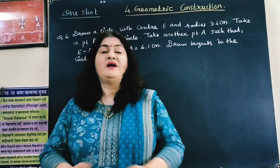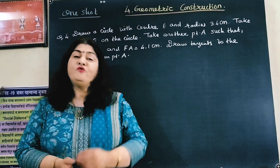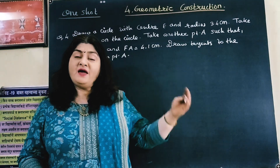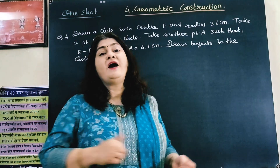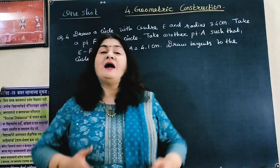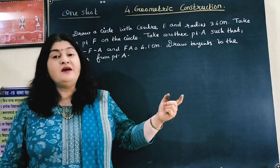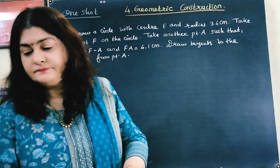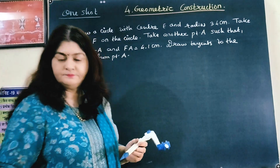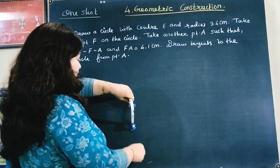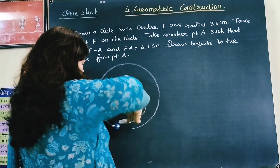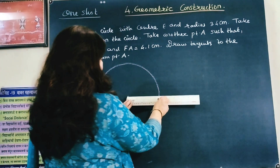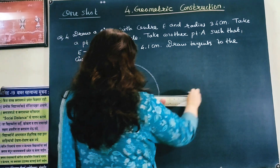Now we are on the fourth type of construction. We have to draw a circle whose radius is 3.4 cm and its center is E. On the circle, we have to take point F, and we have to take point A such that E-F-A are collinear and FA equals 4.1 cm. At the end, we have to draw tangents from point A to the circle. Let us draw the circle with radius 3.4 cm. This is radius 3.4 cm. The circle's center is E. I will draw a long ray.